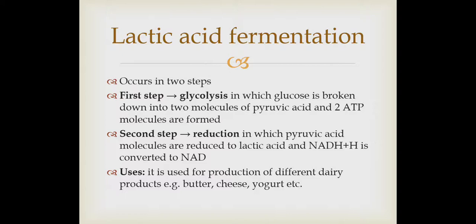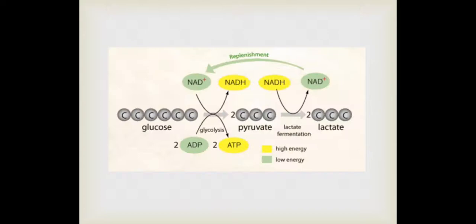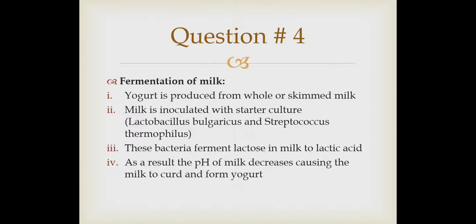The second step is reduction, but here NADH reduces the pyruvic acid into lactic acid — not into ethyl alcohol, but into lactic acid. In lactic acid fermentation, the pyruvic acid molecules are reduced to lactic acid, and NADH (the reduced form of nicotinamide adenine dinucleotide) is converted back into its oxidized form, NAD+. This process is used for the formation of dairy products like butter, cheese, and yogurt. In the reaction: glucose (six-carbon) is first converted to pyruvic acid (three-carbon), and then reduced to lactate, also called lactic acid, which is also a three-carbon compound.